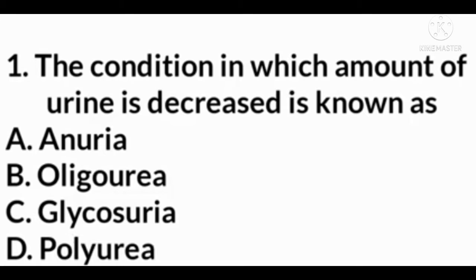First question: the condition in which the amount of urine is decreased is known as — correct answer is B: Oliguria.